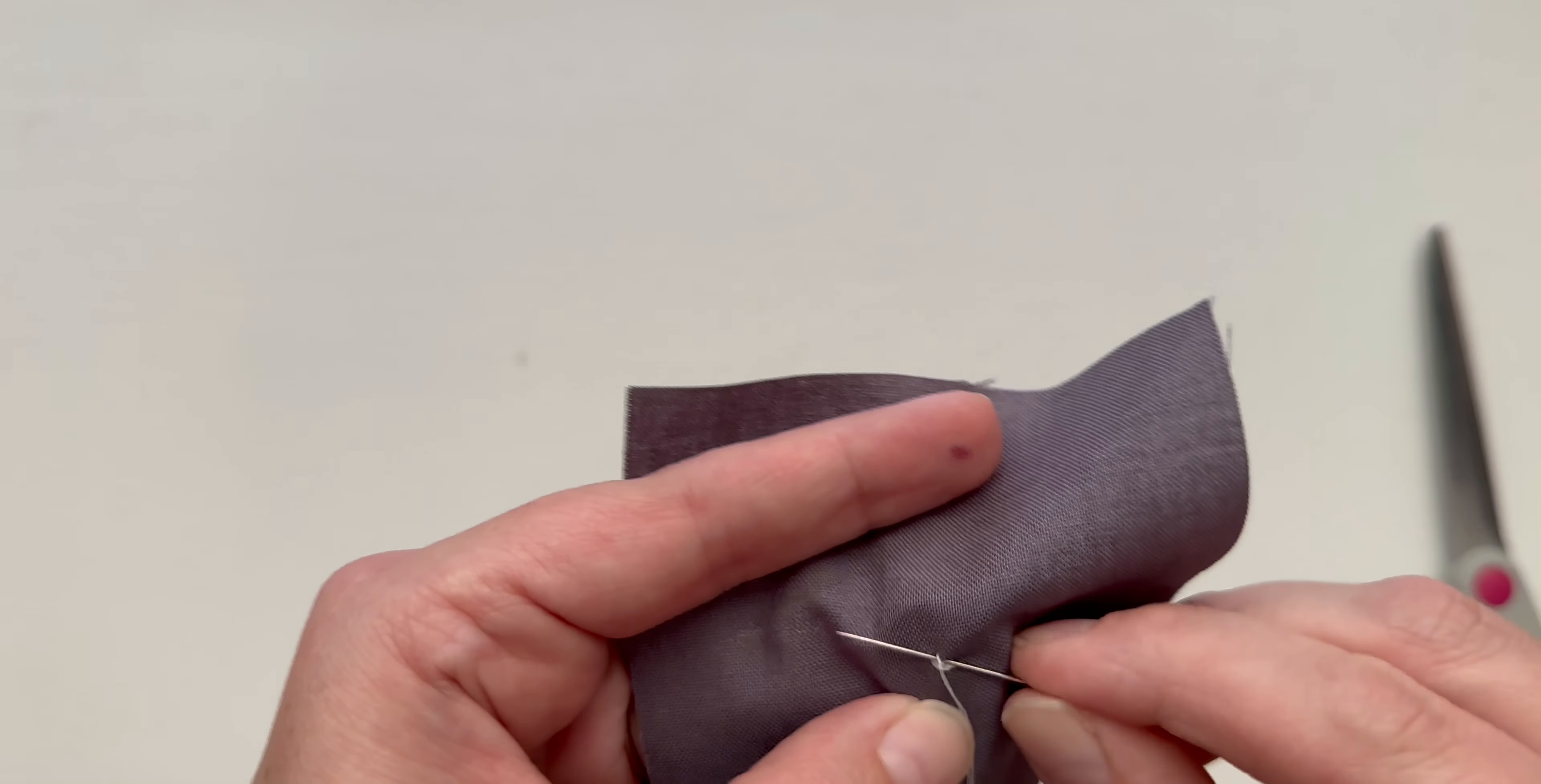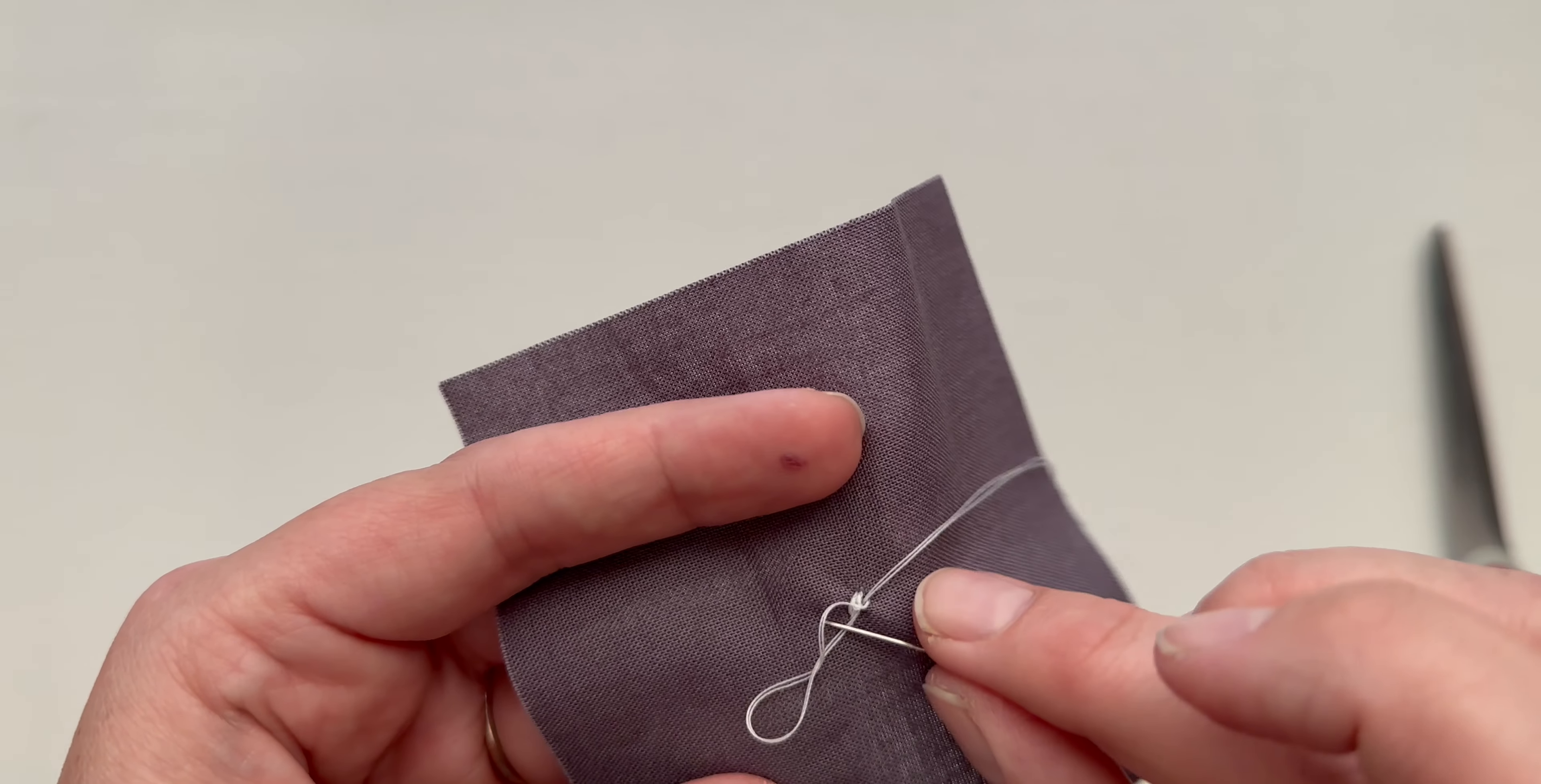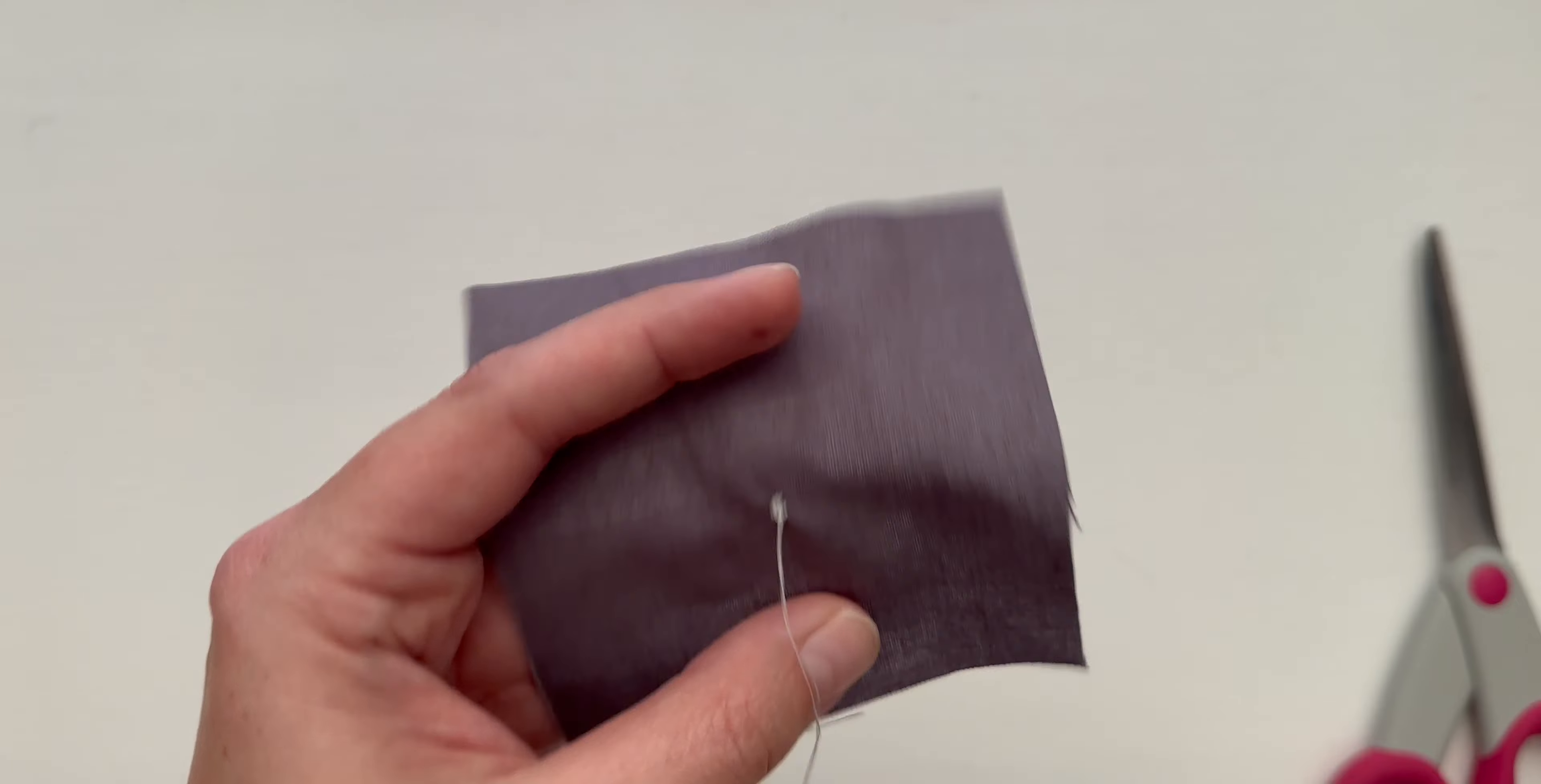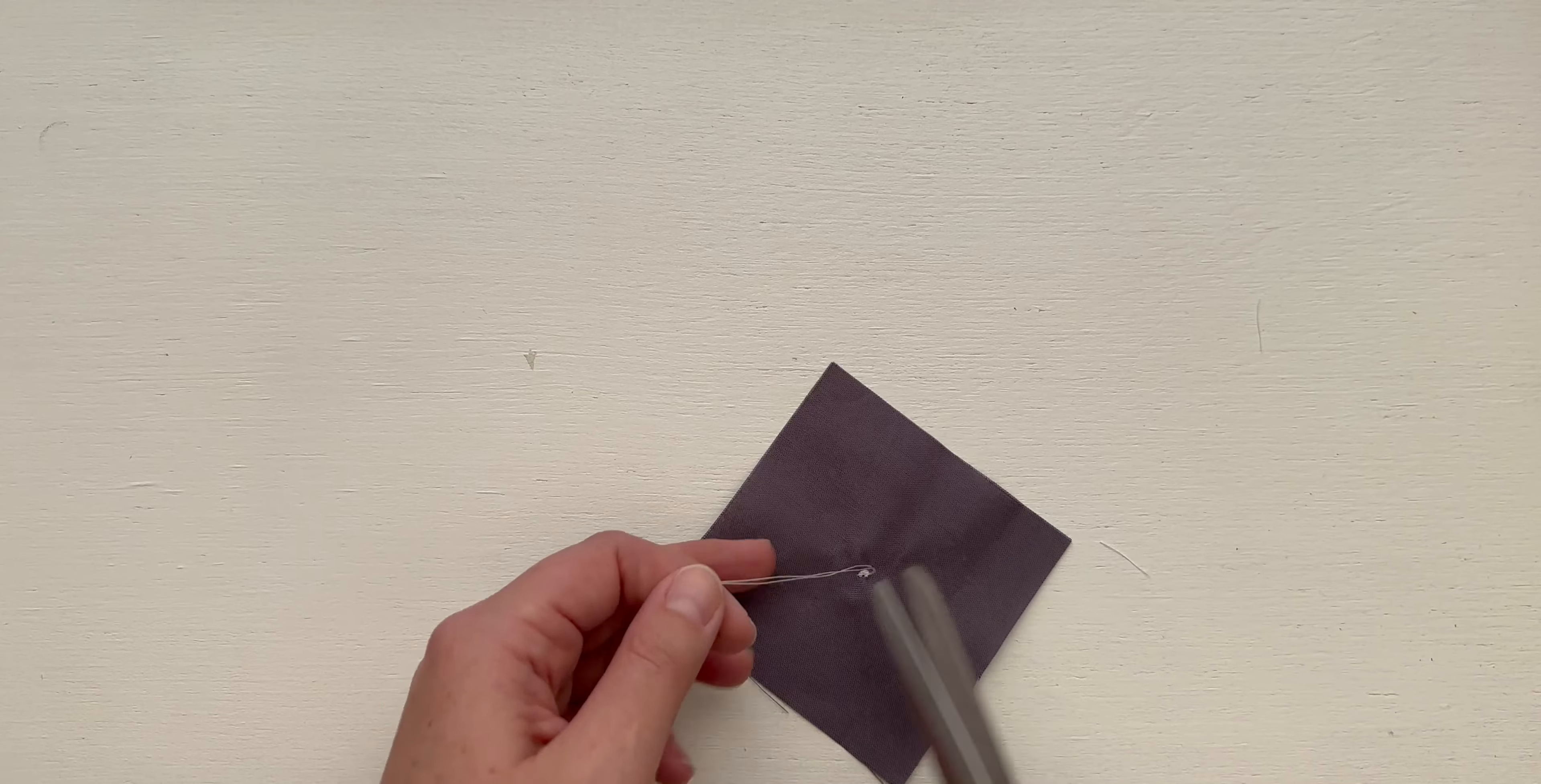We're going to do one more of those. We're just going through a little bit of the fabric, through my loops. Then I'm going to pull. Once you have done that, just trim it off.